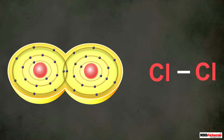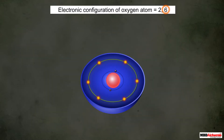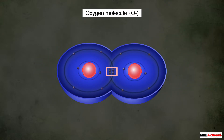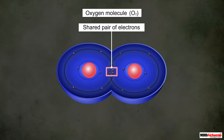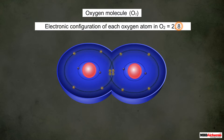Now consider an oxygen atom. It has six electrons in its valence shell and needs two more electrons to complete its octet. These it can get from another oxygen atom. So two oxygen atoms come together, and each shares two of its electrons with the other, giving rise to two shared pairs of electrons belonging to the valence shell of both atoms. This forms a molecule of oxygen in which each atom has a complete octet.